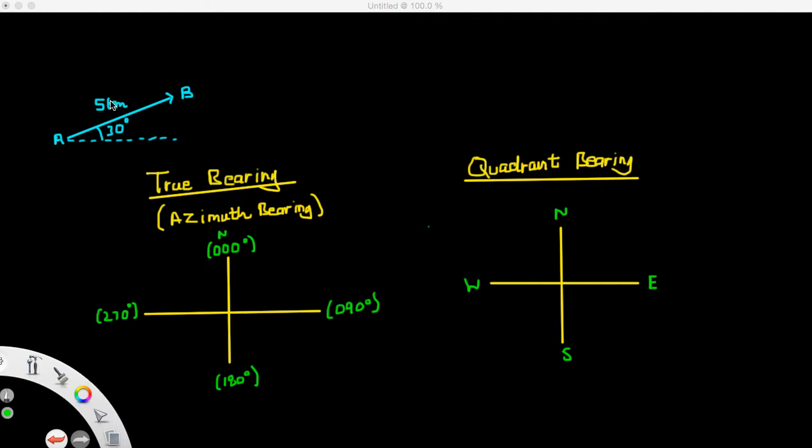Now, in that example, we represented a vector that was 5 kilometers in magnitude and had a direction of 30 degrees to the horizontal. So in this video, we're going to look at two ways of determining the direction of a vector.